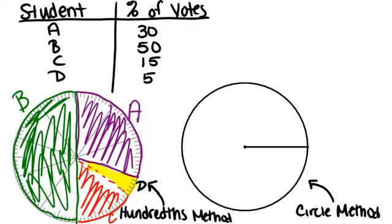The nice thing about a pie chart is it's very visual, and you can see how much bigger student B's area is compared to the others. If you use the circle method, your result will be the same. It's just how you think about it—in terms of percentages or degrees.